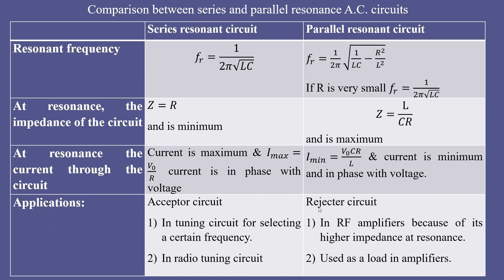The parallel resonant circuit is also called a reject circuit because the minimum current is observed at resonance, and it rejects that particular set of frequencies. It is used in RF amplifiers because of its higher impedance at resonance — the impedance of the circuit becomes maximum at resonance. Therefore, if you want a high-impedance circuit, you use this parallel resonance circuit.